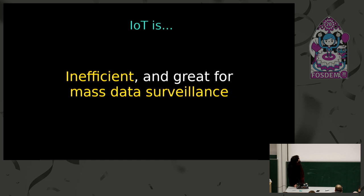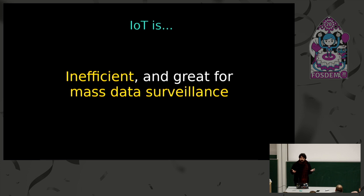What IoT has become, even with all these interesting features, is kind of an inefficient system that is obviously designed in a way that makes data surveillance very palpable and useful for the third parties controlling these systems — basically acting as gateways for devices in our homes. I see it as a data sovereignty problem with further social implications.